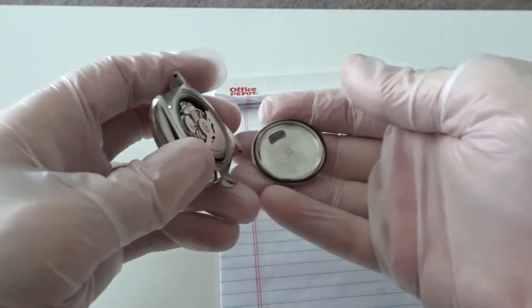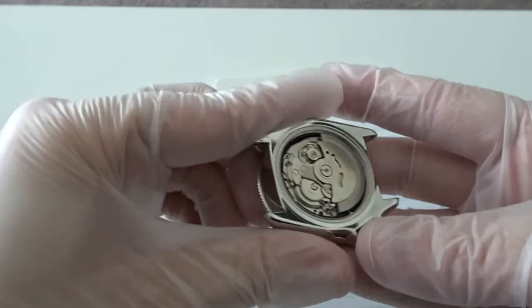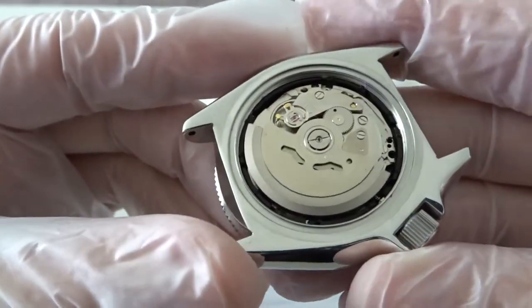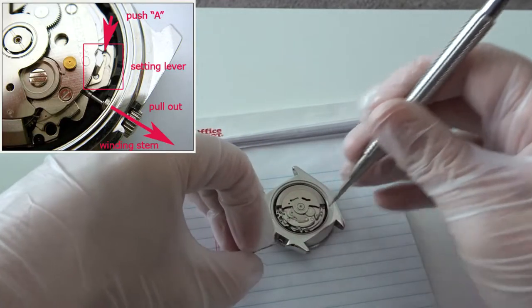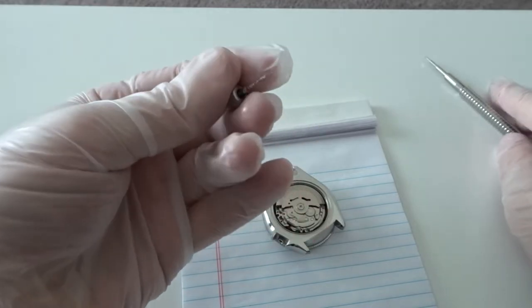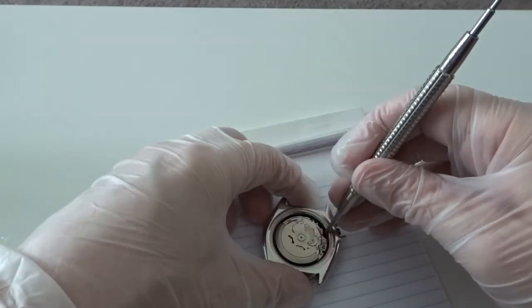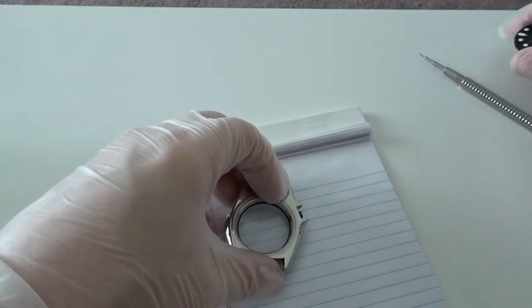Once you have the case back off, now you have to remove the movement. To do this you need to be able to remove the crown, which on Seiko movements is just a matter of pressing down on a small lever while pulling out the crown at the same time. Now that the crown is out you can gently pry out the movement. Once it's out of the case, put it in a safe location off to the side.